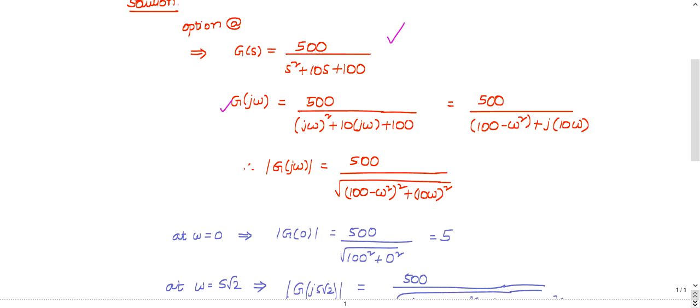Find the magnitude in the omega domain by replacing s with j omega. j squared is minus 1, so minus omega squared. 100 minus omega squared is the real part, and the imaginary part is 10 omega.